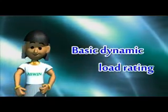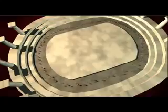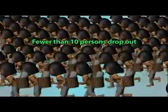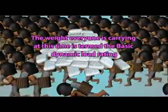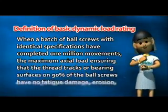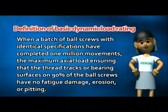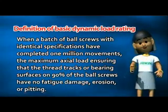What is the Basic Dynamic Load Rating? Suppose 100 runners are carrying heavy objects in a marathon and they run 1 million laps around the track at the same speed. At least 90 athletes must complete the full race, and fewer than 10 persons can drop out. The weight that everyone is carrying is termed the Basic Dynamic Load Rating. It is defined as the maximum axial load ensuring that, after a batch of identical ball screws complete 1 million movements, the thread tracks or bearing surfaces on 90% of the ball screws have no fatigue, damage, erosion, or pitting.